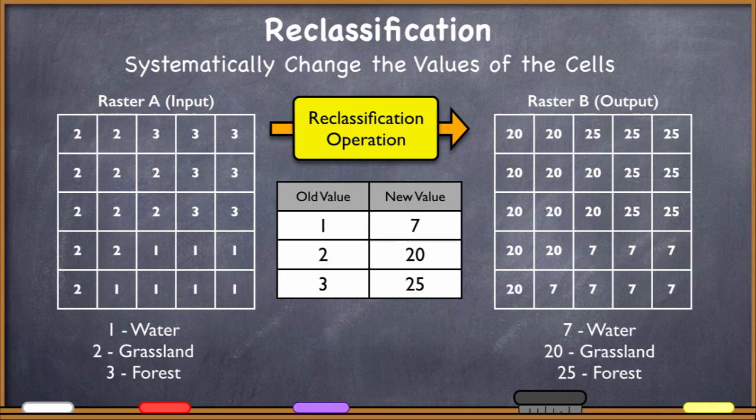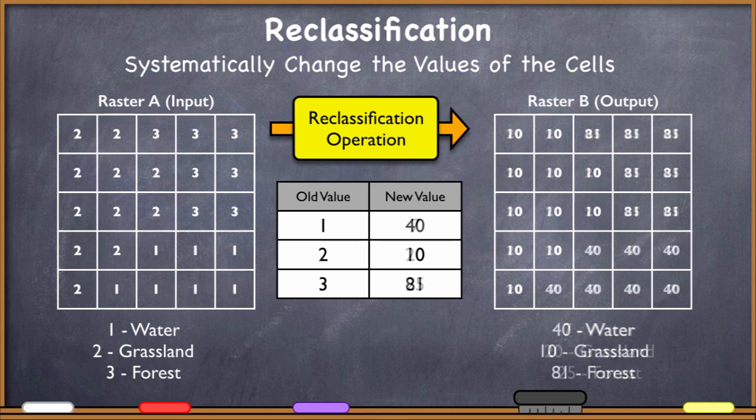I've got old values and new values. If I do that, the computer would fill out the output raster so that it looks like this. I've got 20s, 25s, and 7s now for water, grassland, and forest. I've reclassified this raster so that all of the water is 7 instead of 1, grassland is 20 instead of 2, and forest is 25 instead of 3.